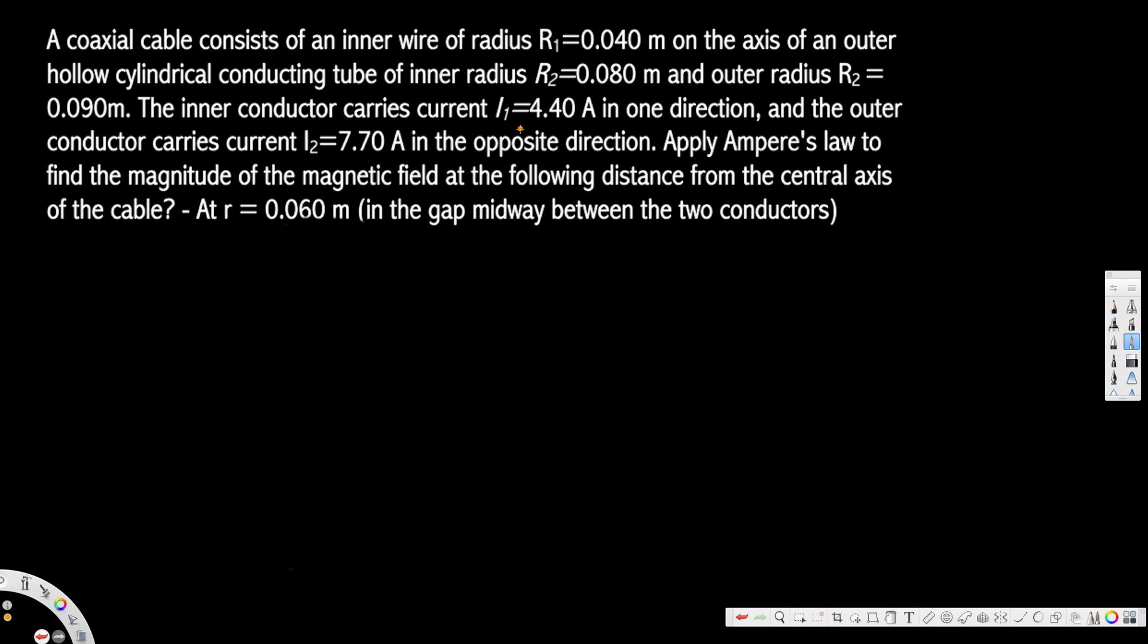The inner conductor carries current I₁ = 4.4 A in one direction and the outer conductor carries current I₂ = 7.70 A in the opposite direction. Apply Ampere's law to find the magnitude of the magnetic field at the following distance from the central axis of the cable: r = 0.06 m.